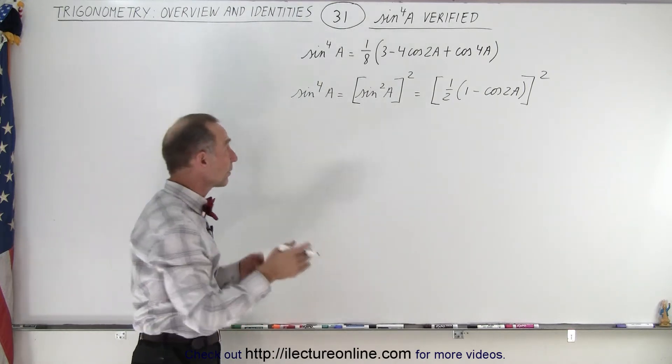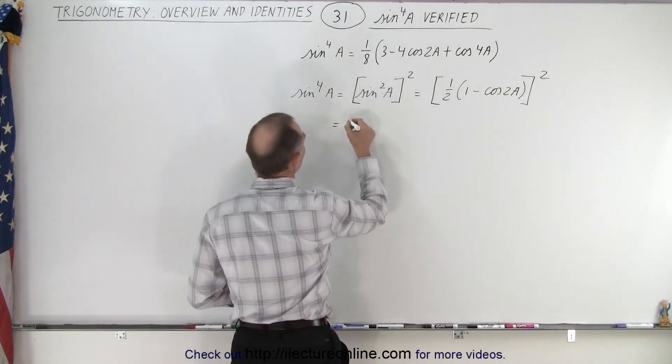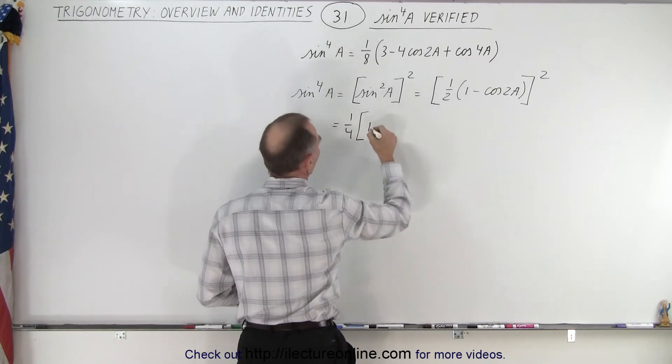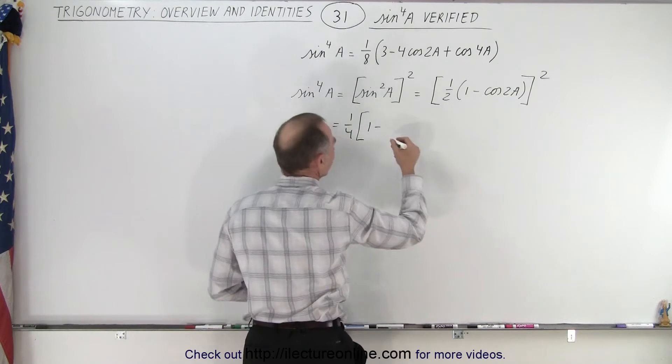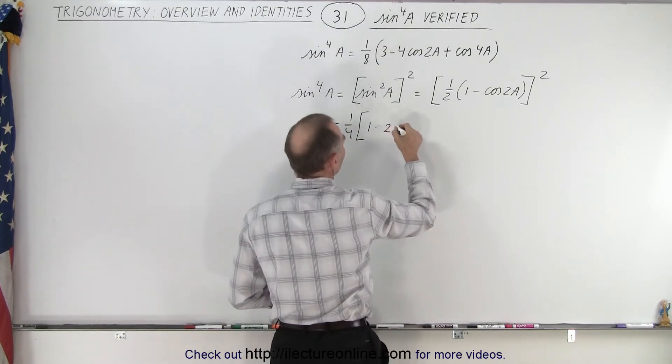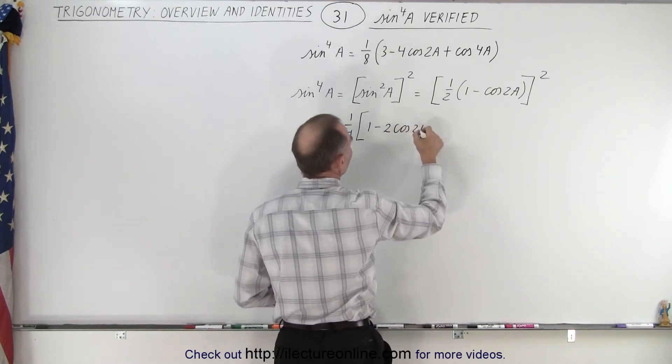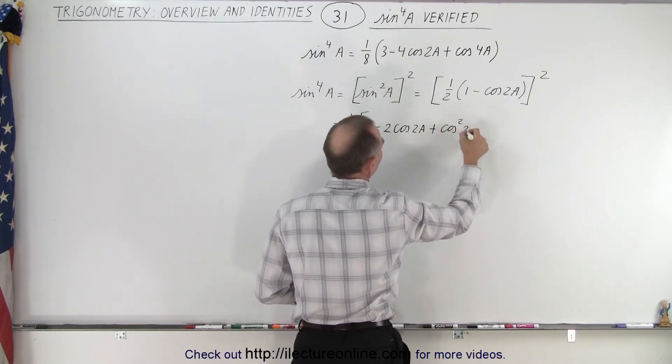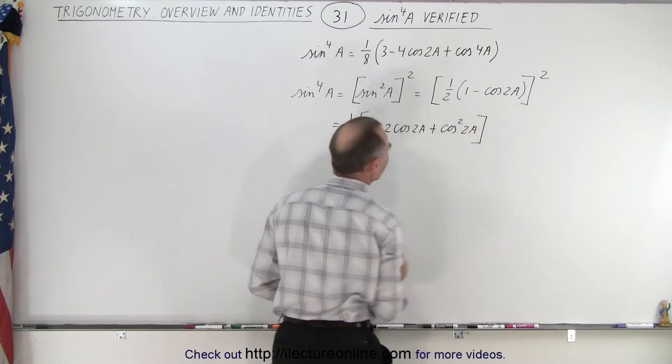Alright, now if we square what's in the brackets, this would be equal to 1/4 times the first term squared minus twice the product of the two, which is 2 times the cosine of 2a plus the last term squared, which is plus the cosine squared of 2a.